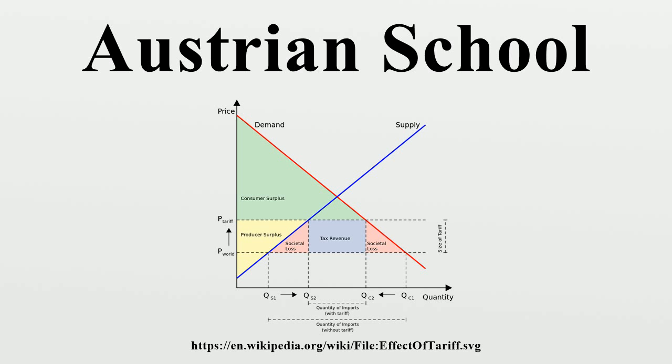Austrians state that, because individuals' time preferences have not changed, the market will tend to re-establish the old proportions between current and future production. Depositors will tend to remove cash from the banking system and spend it. Banks will then ask their borrowers for repayment, and the excessive capital goods will be liquidated at lower prices to retire the now unprofitable loans.